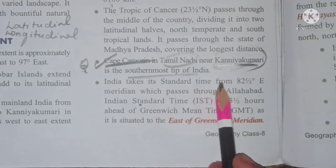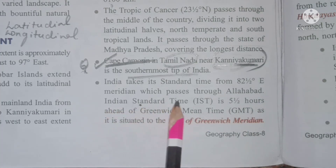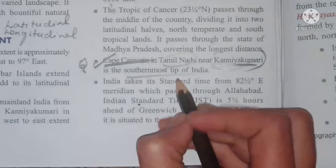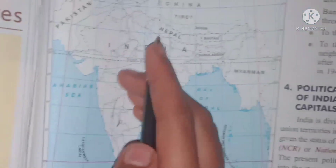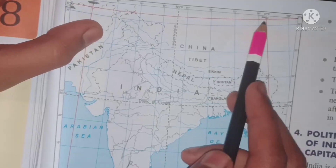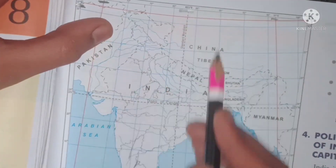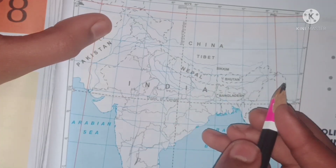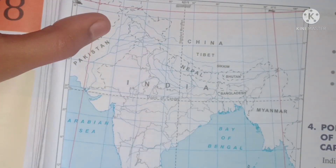India takes its standard time from the 82.5 degrees east meridian, which passes through Allahabad. Indian Standard Time (IST) is 5.5 hours ahead of Greenwich Mean Time (GMT), as India is situated to the east of the Greenwich Meridian. On the map, the dotted line at 82.5 degrees east represents the standard meridian passing through the state of Allahabad.